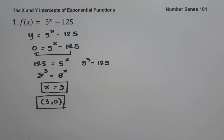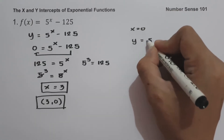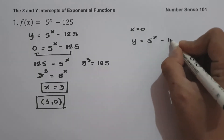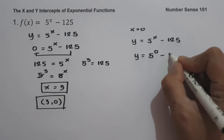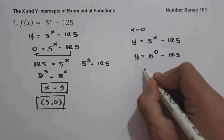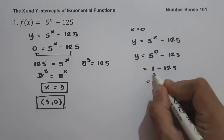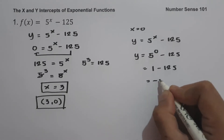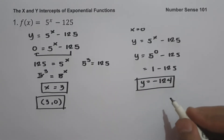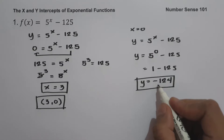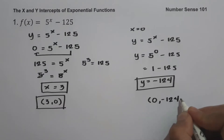To solve for the y-intercept, let us set x equal to 0. We have y equals 5 raised to x minus 125, so y equals 5 raised to 0 minus 125. Simplifying, 5 raised to 0 is 1, and 1 minus 125 is negative 124. So the value of y is negative 124. Since x is 0 and y is negative 124, our y-intercept is (0, -124).